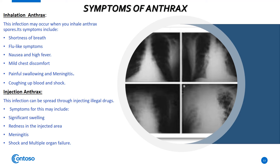Number 3 is Inhalation Anthrax — the main symptoms include shortness of breath, flu-like symptoms, nausea and high fever, coughing of blood, and shock. Number 4 is Injection Anthrax — the main symptoms include significant swelling, shock and multiple organ failure, and redness in the injected area.